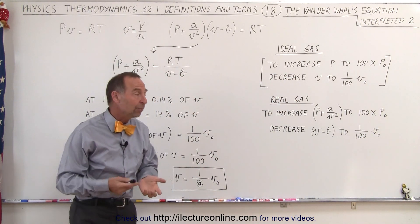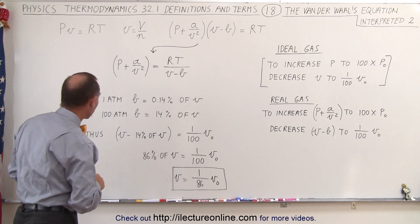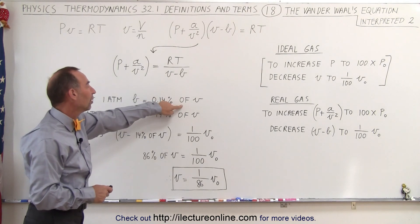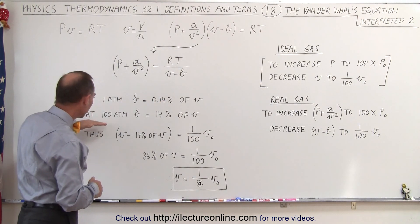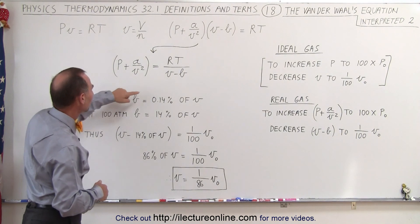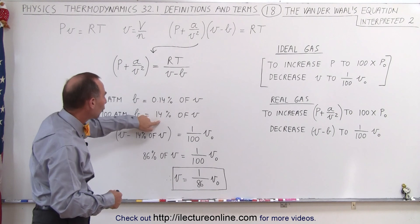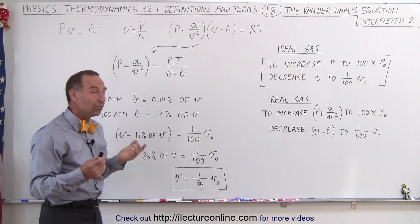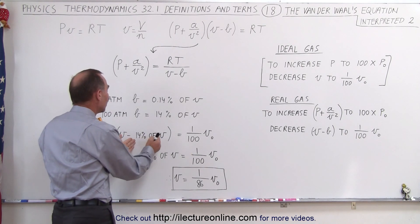Now the question is, at 100 atmospheres how big of a factor is that b, is that constant? Well, at 1 atmosphere b is just 0.14% of the total volume, so we can pretty well ignore it. But at 100 atmospheres, since we have v minus b multiplied by 100, it's now 14% of v instead of 0.14%, which means that instead of writing v minus b, we can write v minus 14% of v.